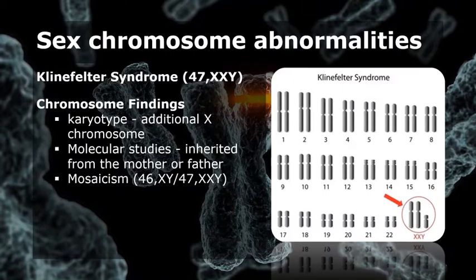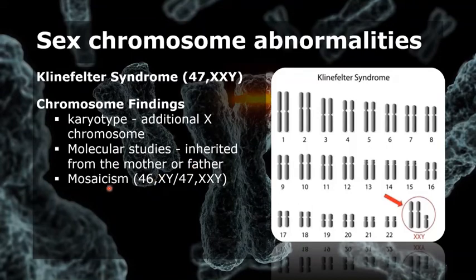For chromosome findings, the karyotype shows an additional X chromosome. Molecular studies have shown there is an equal chance that this additional chromosome will have been inherited from the mother or from the father. A small proportion of cases show mosaicism — 46 XY or 47 XXY — meaning the person has two or more genetically different sets of cells in their body.